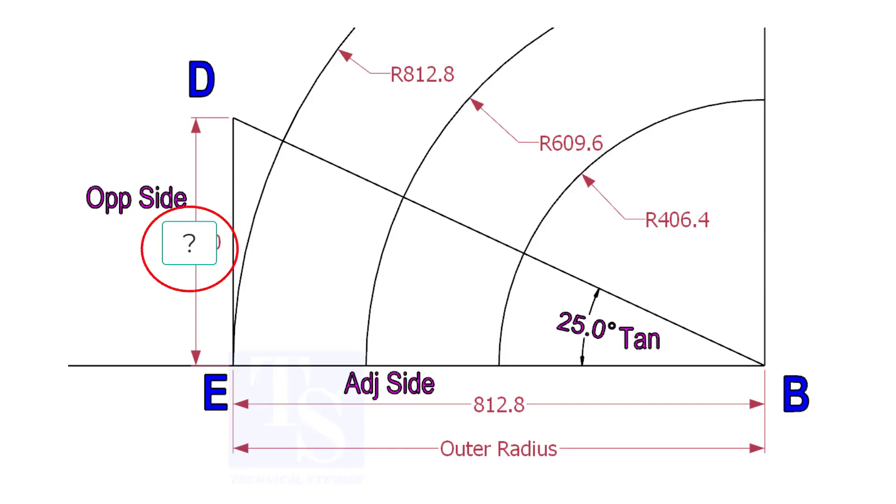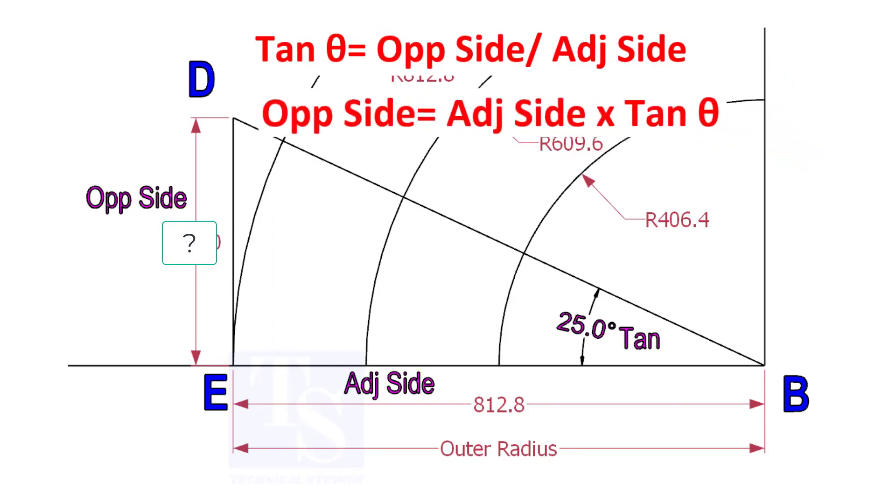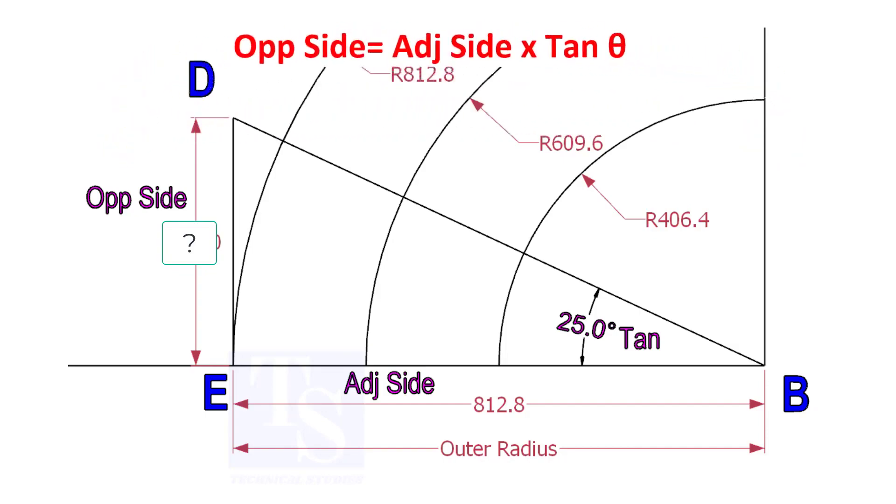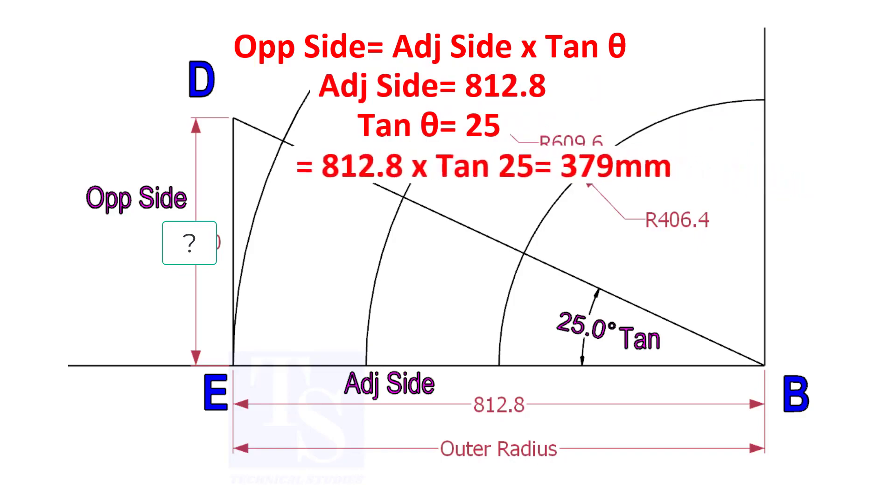To calculate ED, we need to apply the formula: tan theta equals opposite side divided by adjacent side. Opposite side equals adjacent side multiplied by tan theta. 812.8 into tan 25 equals 379 millimeters.